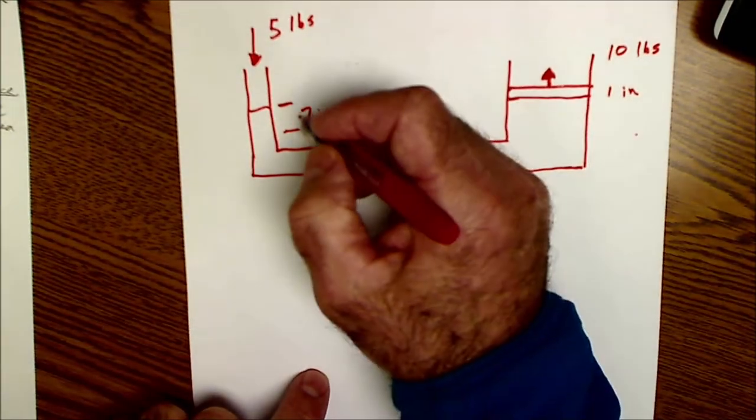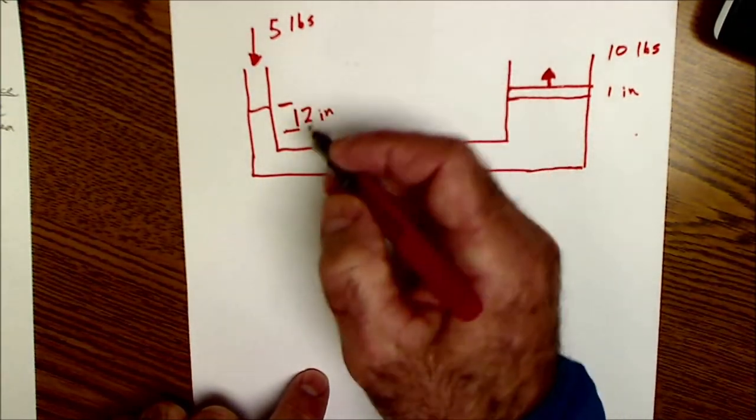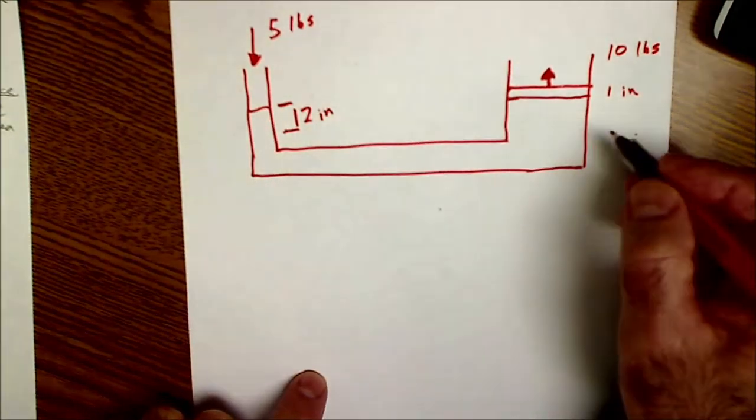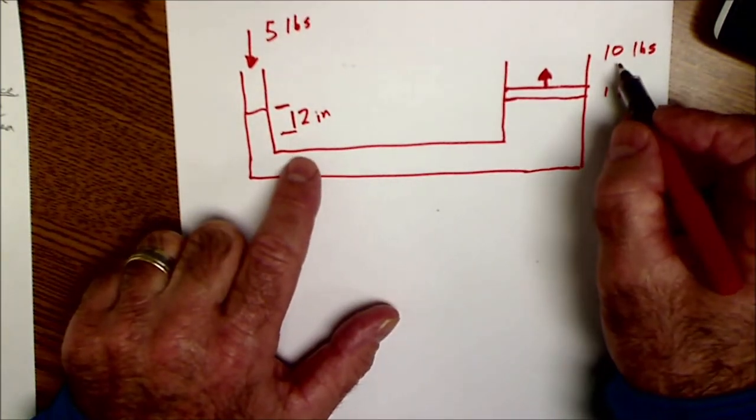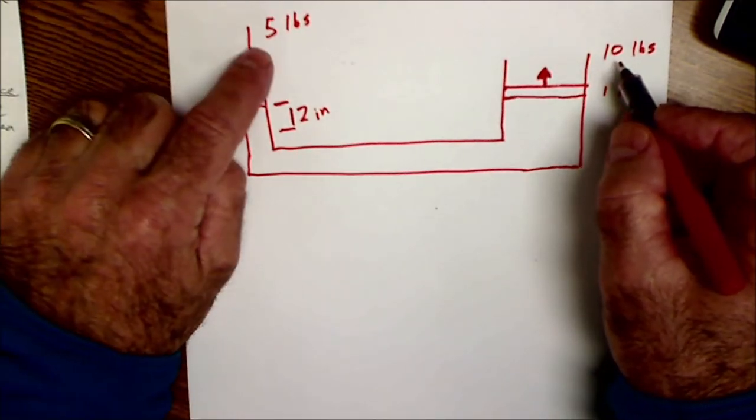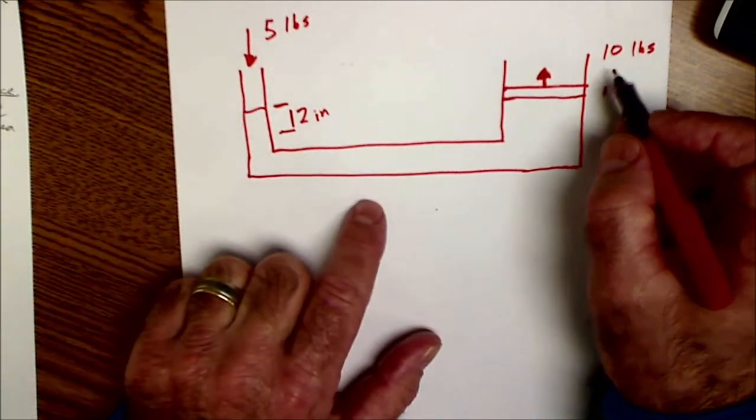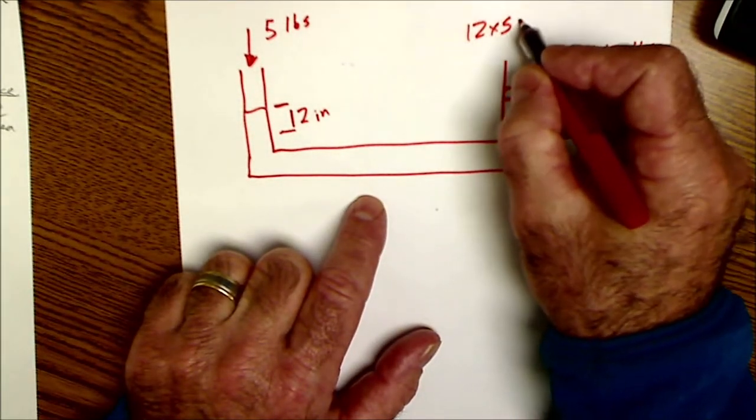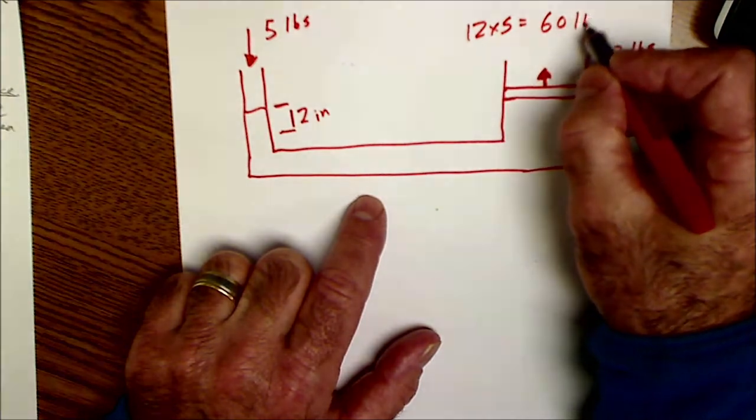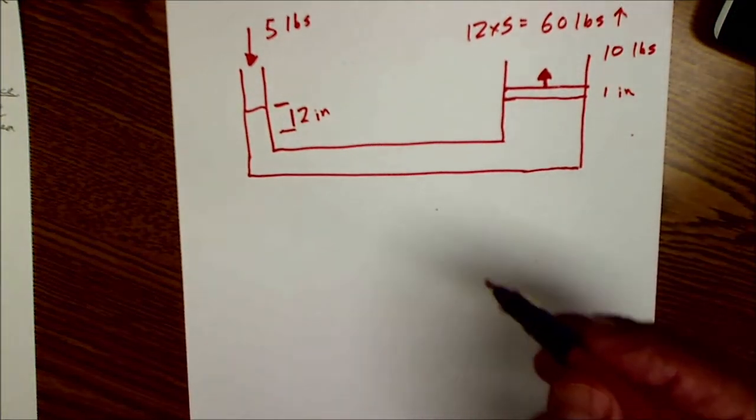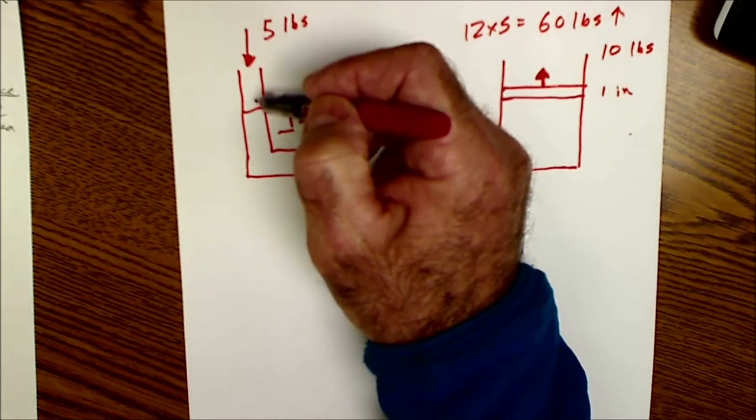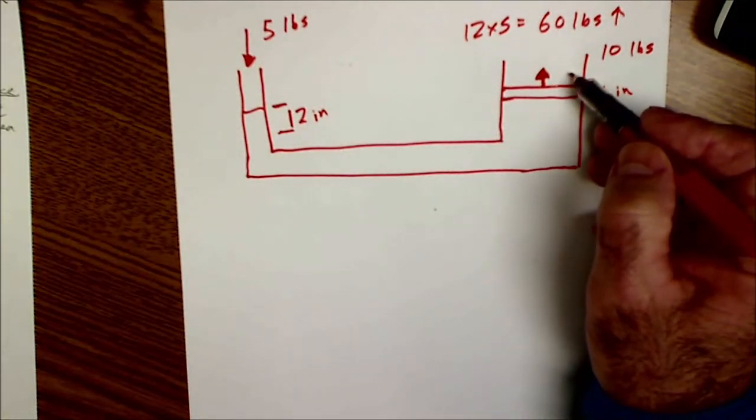So if instead this traveled twelve inches down and this only traveled one inch up this is going to be twelve times more force. So if this is five pounds pushing down so this is twelve times five pounds going up or sixty pounds of force going up. So you could see how with just a little bit of input force you get a really big output force.